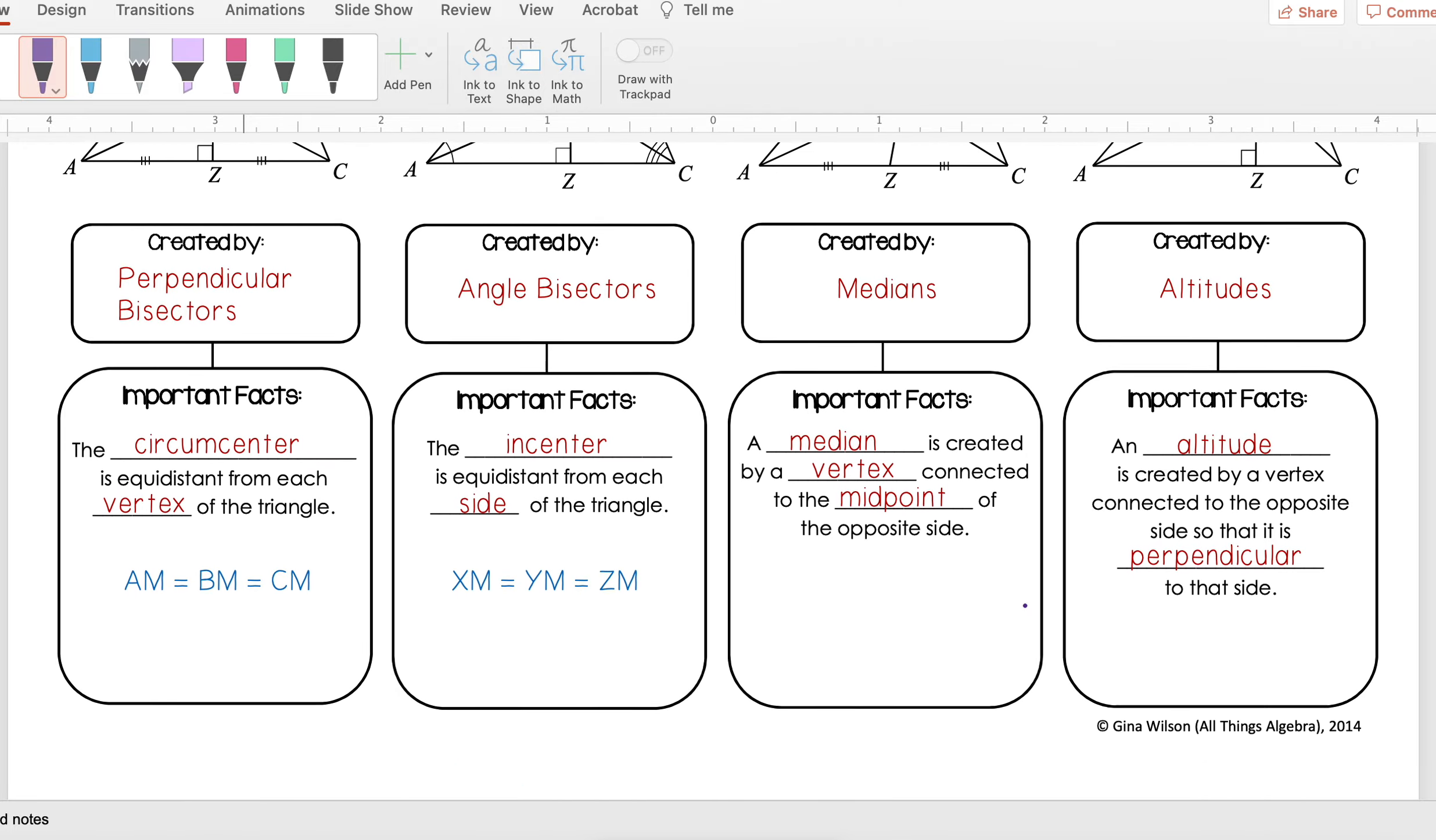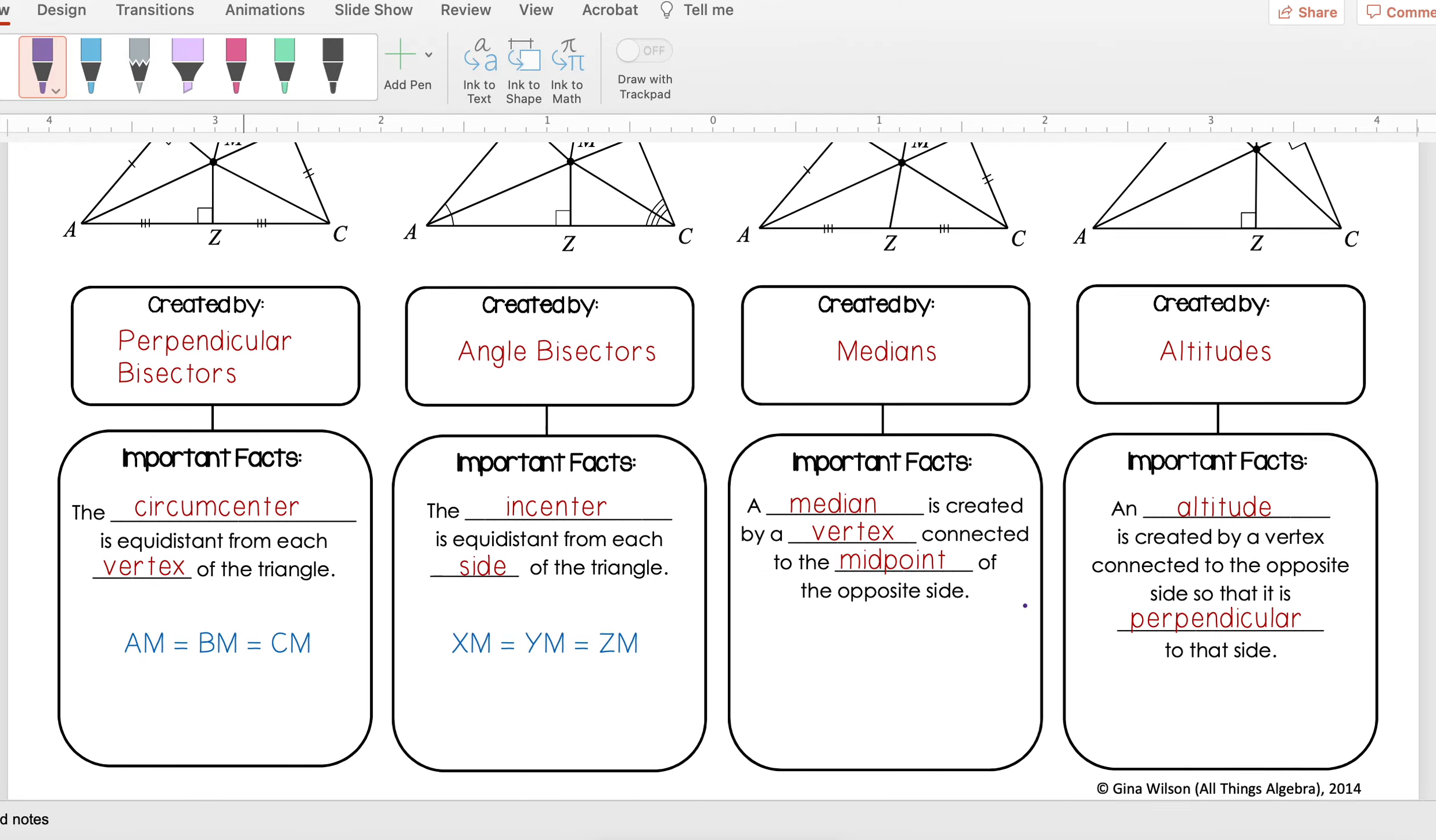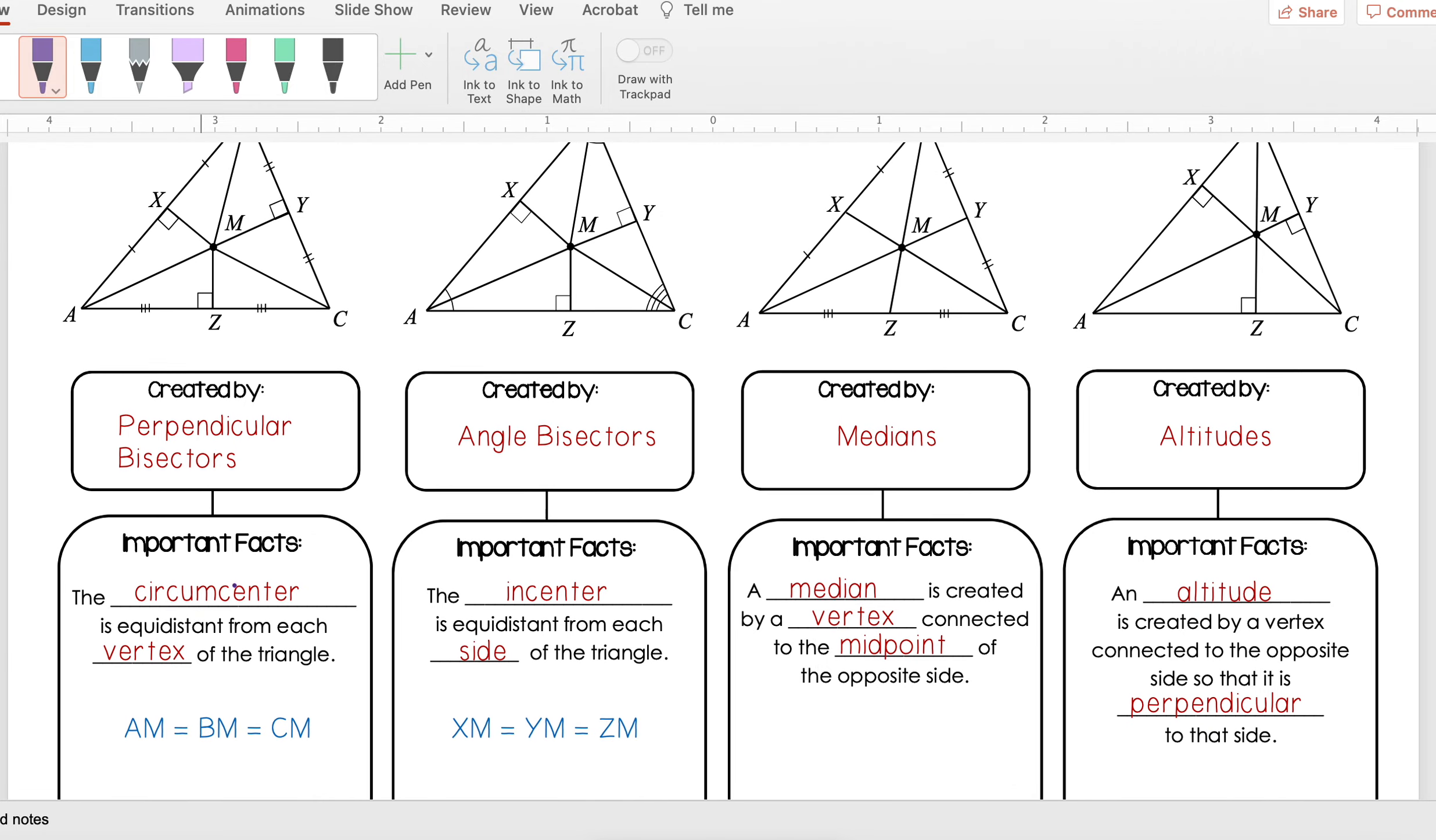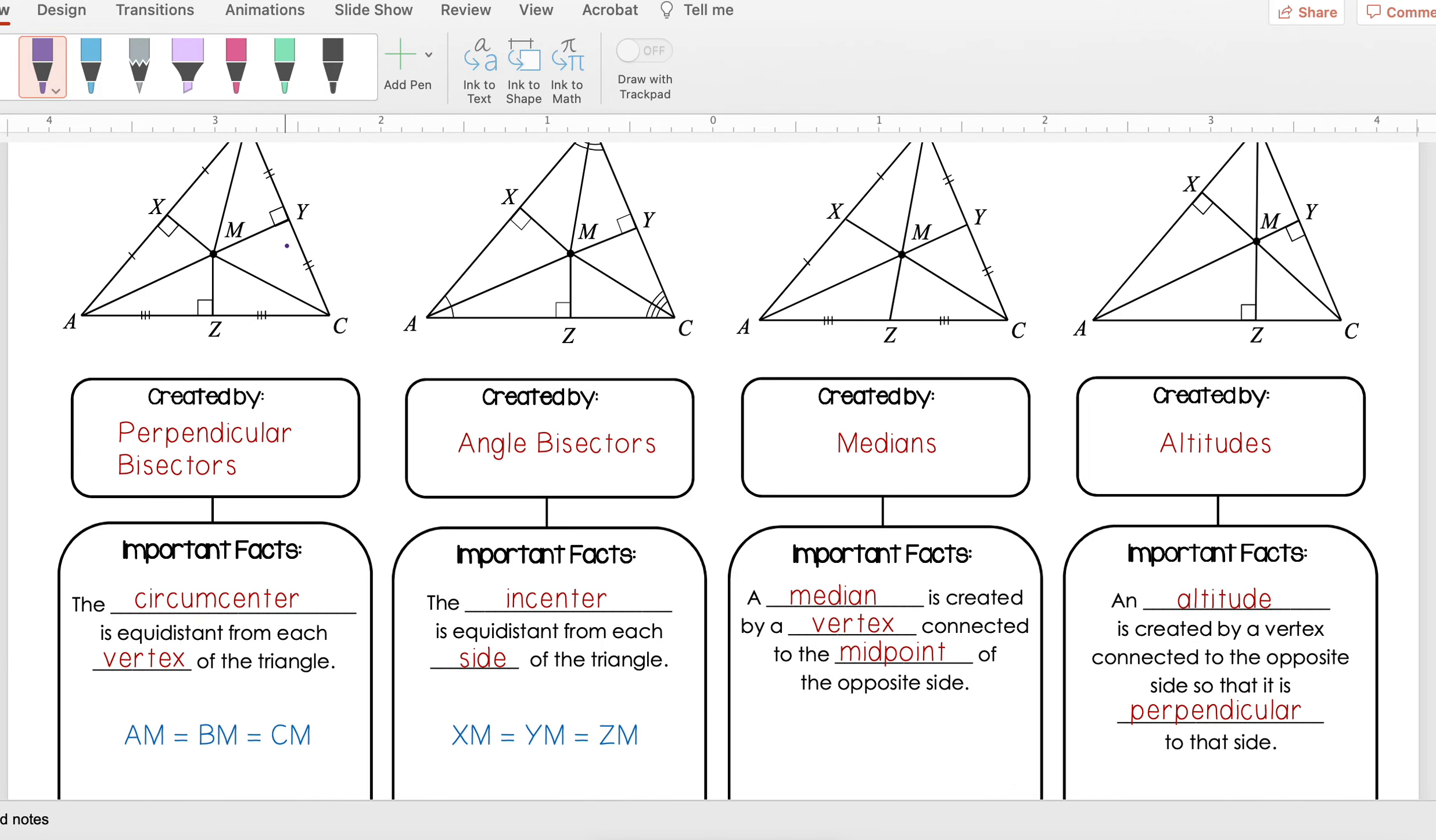So something important to remember about circumcenters is that the circumcenter is equidistant from each vertex of the triangle. If I'm looking at this triangle here, what we learned about circumcenters is that it means that in this picture, AM is equal to BM, which is equal to CM.